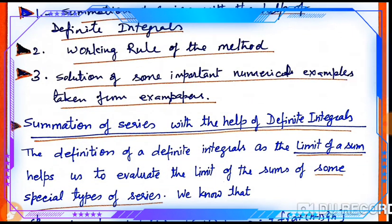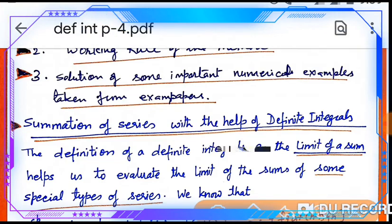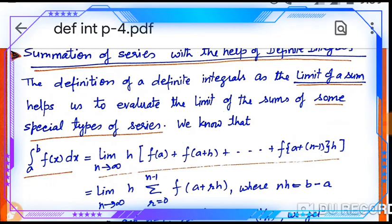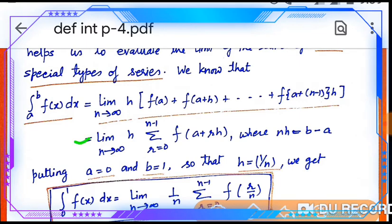We will discuss summation of series with the help of definite integrals. The definition of a definite integral as the limit of sum helps us to evaluate the limit of some special type of series. The integral from a to b of f(x) dx equals limit as n tends to infinity of h·[f(a) + f(a+h) + ... + f(a+(n-1)h)]. Simplifying: limit n→∞ of h · Σ(r=0 to n-1) f(a+rh), where nh = b−a.